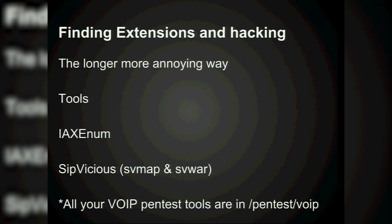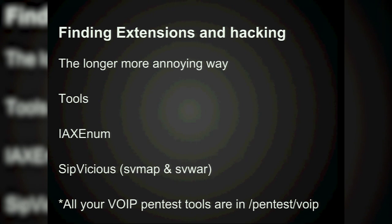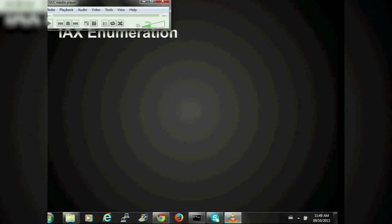Finding extensions and hacking: you have tools in BackTrack, primarily iaxenum and sip-vicious — which includes svmap, svwar, and the report tool nobody uses. The pentest tools for this afternoon will be in the pentest/voip folder so you can see all the extra stuff.